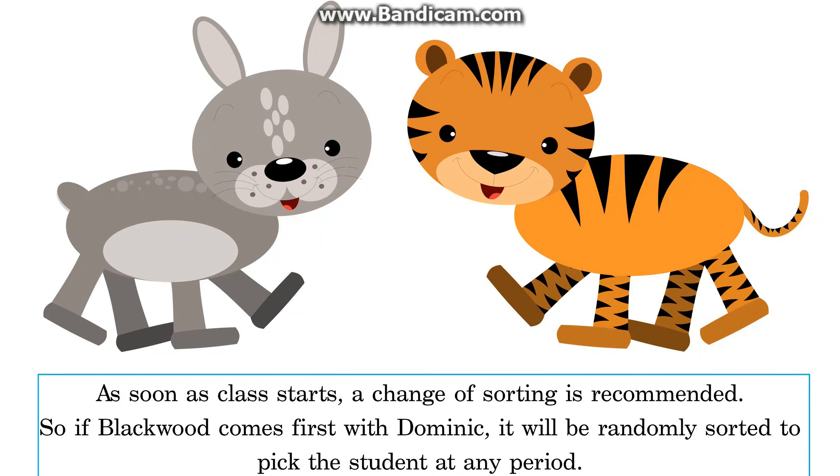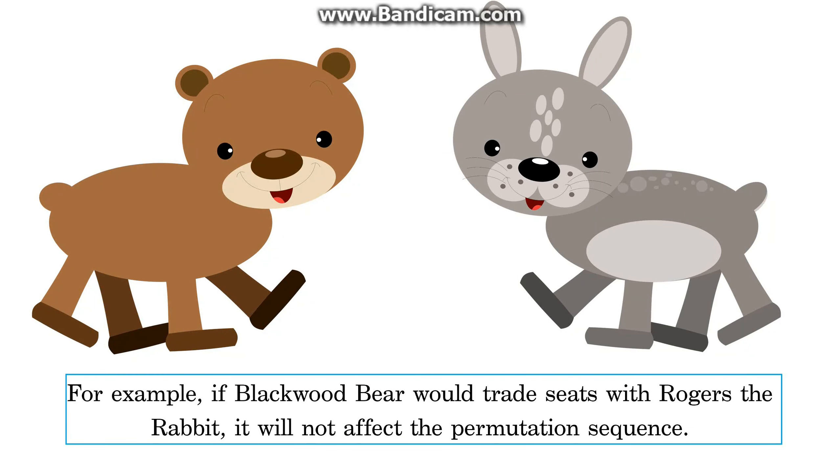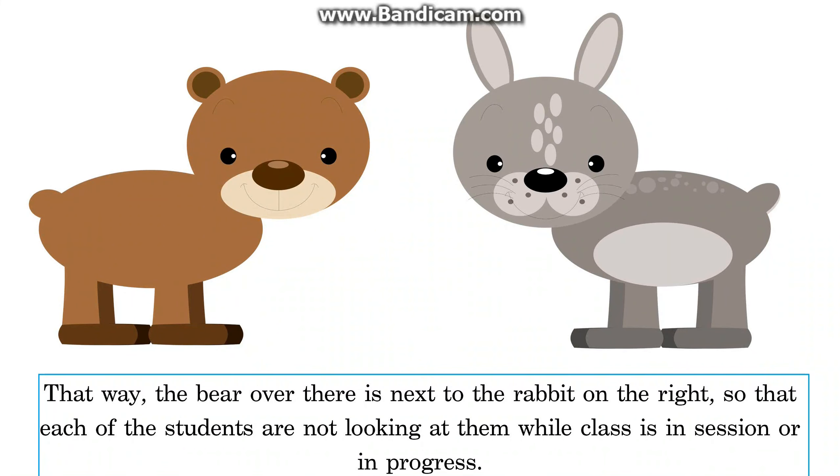So if Blackwood comes first with Dominic, it will be randomly sorted to pick the student at any period. For example, if Blackwood Bear would trade seats with Rogers the rabbit, it will not affect the permutation sequence. That way, the bear over there is next to the rabbit on the right, so that each of the students are not looking at them while class is in session or in progress.